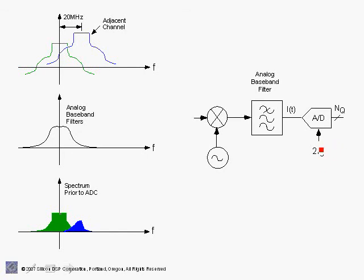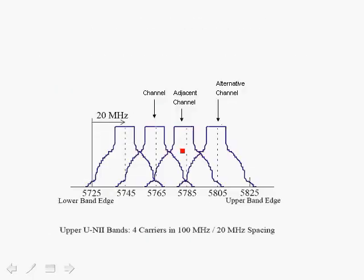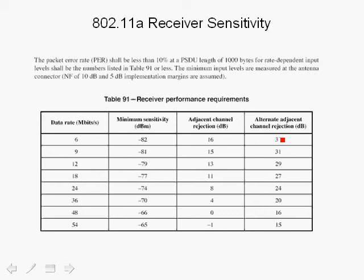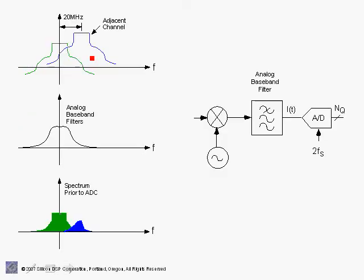In a particular architecture you could use a higher sampling rate, but here we use twice the sampling rate as an example. The analog baseband filter should filter out and reject the alternative channel — it is separated far enough that the filter stages in the direct conversion receiver can achieve the required 32 dB rejection at 6 Mbps. We are mainly concerned with the adjacent channel because the analog baseband filter cannot completely reject it.